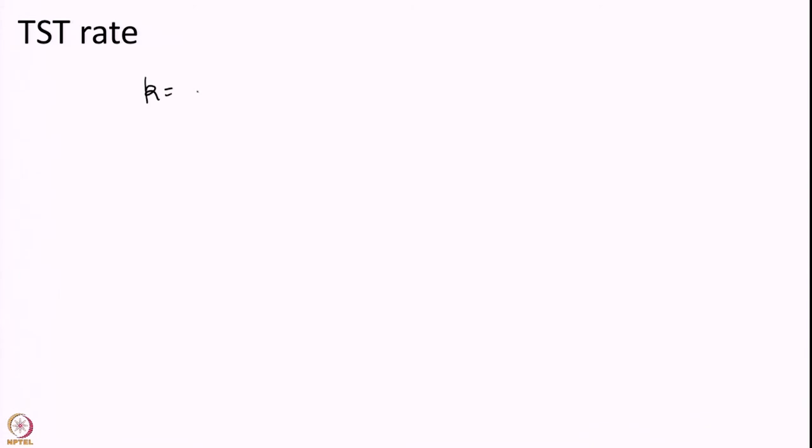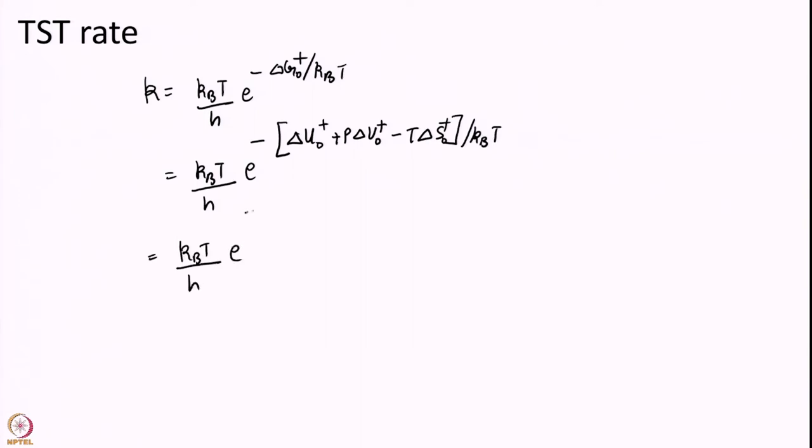But well so what? So, K we had shown is equal to KT over H e to the power of minus delta G naught over KT. But delta G is given by delta U naught plus P delta V minus T delta S.